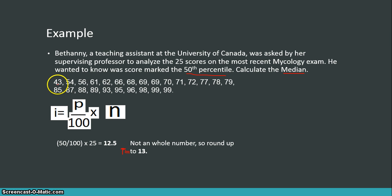1, 2, 3, 4, 5, 6, 7, 8, 9, 10, 11, 12, 13. 77 would mark the 50th percentile. 50% of the data in this data set is below 77.